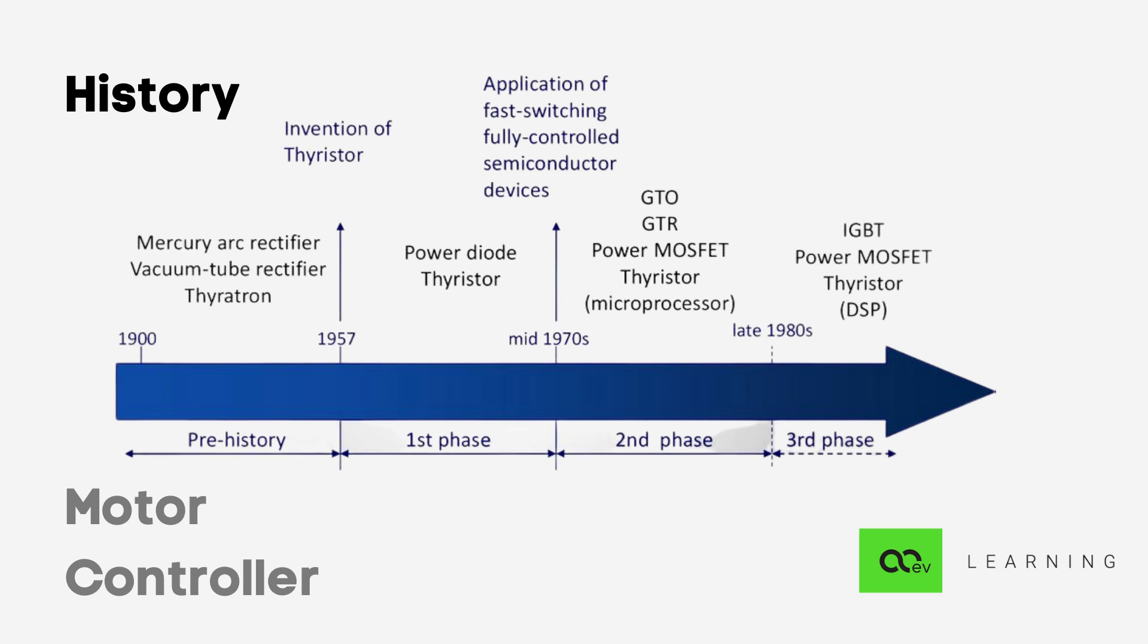It was the first device which could rectify or convert alternating current to direct current. Until the 1940s, the pace of development was mediocre. Things started to move when Bell Laboratories started to take semiconductors seriously.